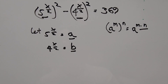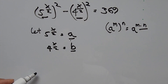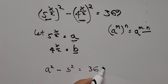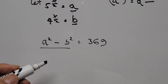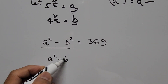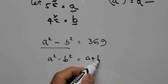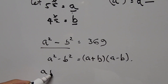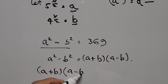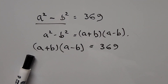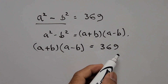Substituting these variables into our equation, we get a squared minus b squared equals 369. The left hand side is in the form of a difference of squares. From the special factoring rule in algebra, a squared minus b squared equals (a plus b) times (a minus b). So we have (a plus b) times (a minus b) equals 369.